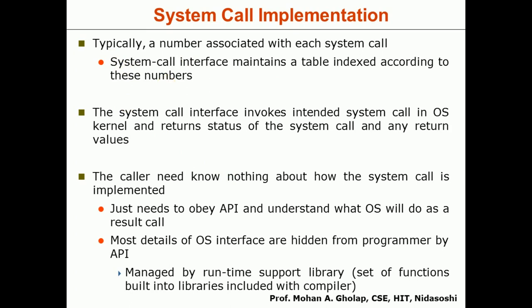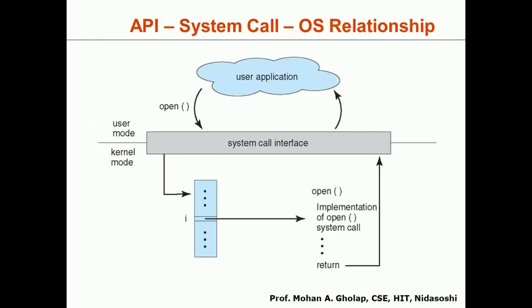For system call implementation, a number is associated with each system call. The system call interface maintains a table indexed according to these numbers. The system call interface invokes the intended system call in the OS kernel and returns the status and any return values. The caller need not know how the system call is implemented — they just need to obey the API and understand what the OS will do.